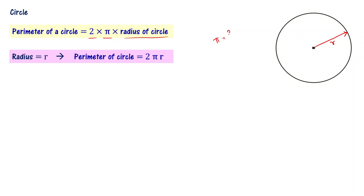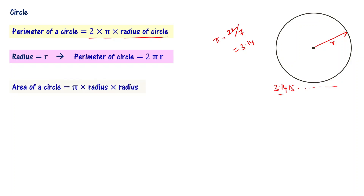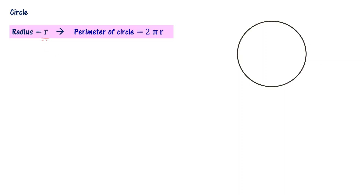Pi is approximately 22/7, or sometimes we use 3.14. Actually, pi is a very large decimal number — it is 3.14159... and so on, with many digits after the decimal point. Now, the area of the circle is defined as pi times radius times radius. If the radius of the circle is r, then the area of the circle is πr².